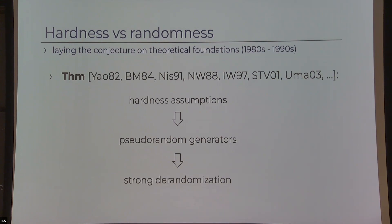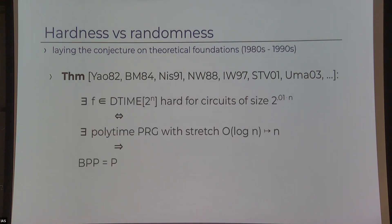Why very strong? Not only did we de-randomize all possible algorithms, we did so in a black-box scenario — one PRG that's good for all algorithms. We actually have characterizations for the existence of PRGs in terms of hardness assumptions. For example, the existence of an efficient PRG is equivalent to a natural hardness assumption: a function computable in exponential time that is hard for non-uniform circuits. This natural hardness assumption characterizes the existence of PRGs.